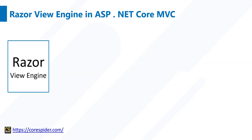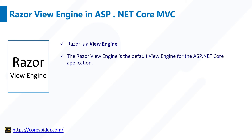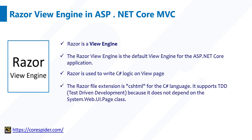Let's understand what is Razor View Engine. Razor is a View Engine. The Razor View Engine is the default View Engine for the ASP.NET Core application. Razor is used to write C# logic on the View page. The Razor file extension is .cshtml for the C# language. It supports TDD, that means Test Driven Development. Test Driven Development is basically focused on unit testing. How to do unit testing in an ASP.NET Core MVC application we will go through in our upcoming videos.